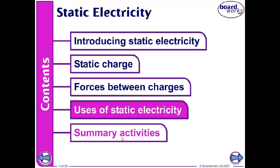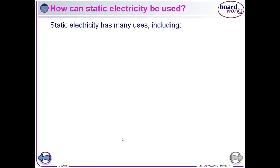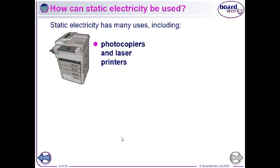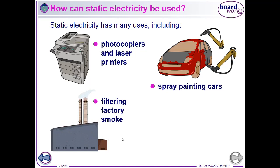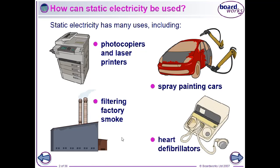We're going to look at the uses and the dangers of static electricity. We have many different uses for static electricity, and these are some of the typical examples you'll find in your physics IGCSE specification. For example, photocopiers and laser printers use static electricity. When we spray paint cars, we use static electricity to attract the paint to the bodywork. To filter out particles from factory smoke, we use static electricity. Heart defibrillators use static electricity — we get a build-up of charge that then discharges through the heart.